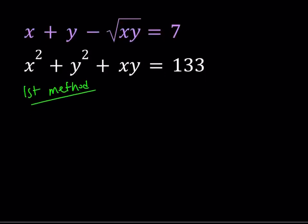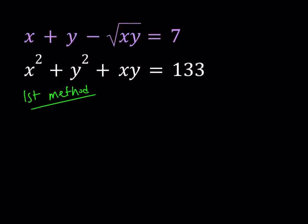So now we do have the system x plus y minus the square root of xy equals 7, and x squared plus y squared plus xy is equal to 133. So for our first method, I'm going to isolate the square root of xy from the first equation.